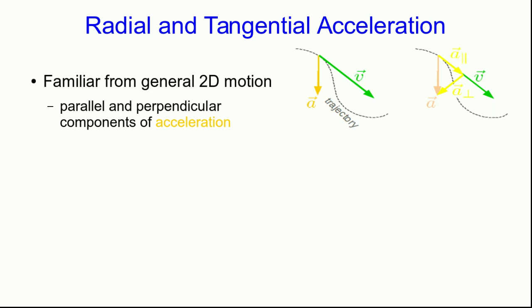While the angular variables are very convenient for describing the motion, they're not as closely related to momentum, energy, and what forces do. So we need to be able to move back and forth, and we'll see how to do that in the next video lecture. In two-dimensional motion, we saw that we can always decompose the acceleration into a parallel component and a perpendicular component.